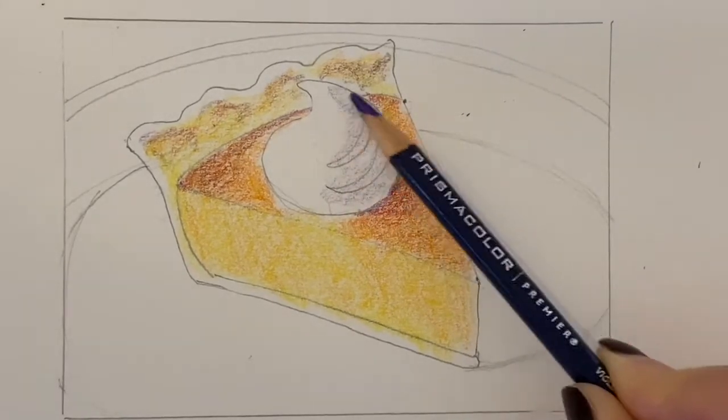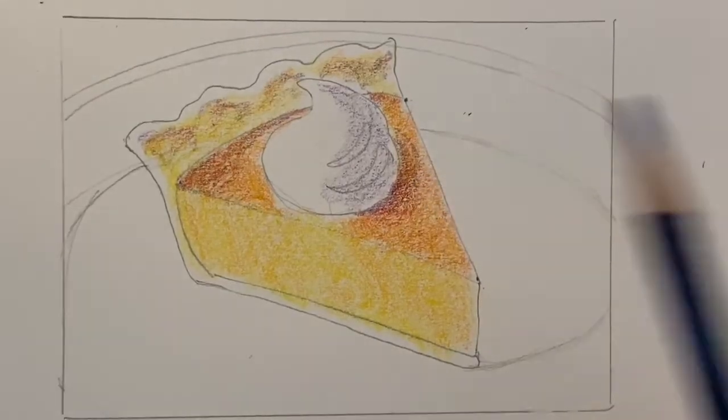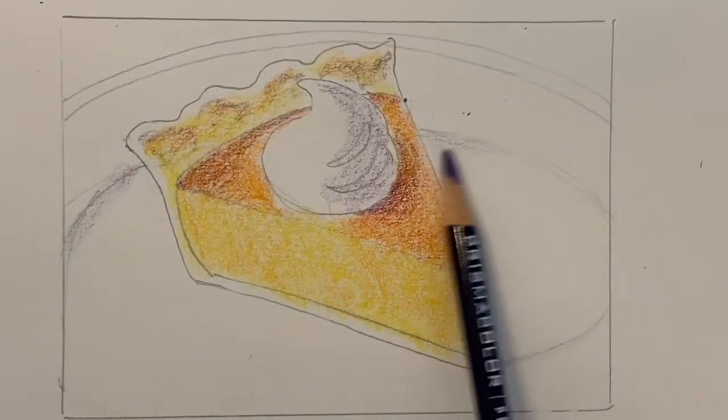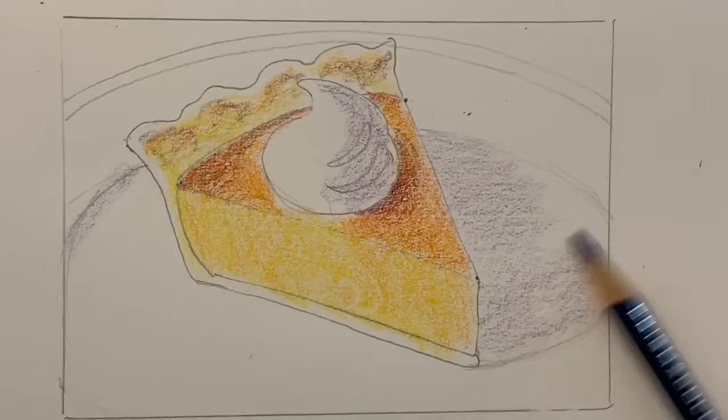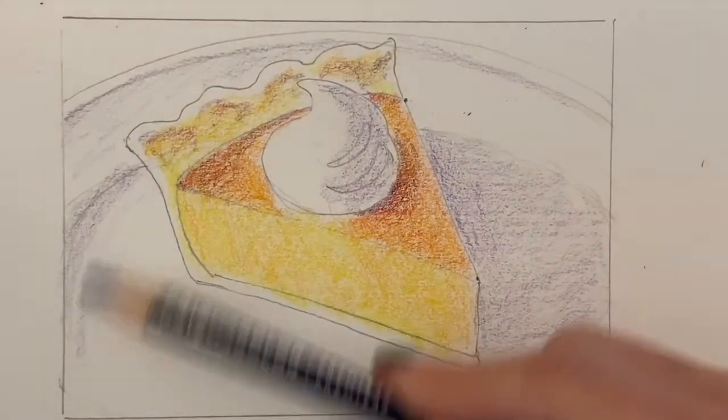Purple is the color I'll use to shade the right-hand side of the whipped cream also and I'll use that to start shading in my cast shadow on the plate. I use a little bit of purple along the rim of the plate as well.